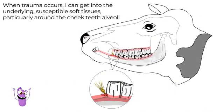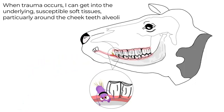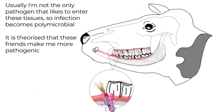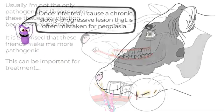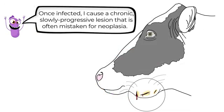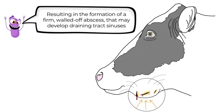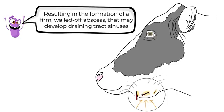Once damage occurs, I get into the underlying susceptible soft tissues, particularly around the cheek teeth alveoli. Usually I'm not the only pathogen that likes to enter these tissues, so infection becomes polymicrobial, potentially making me more pathogenic — and this is important to know for treatment. Once infected, I cause a chronic, slowly progressive lesion that is often mistaken for neoplasia. This is actually due to a pyogranulomatous reaction, resulting in the formation of a firm, walled-off abscess that may develop draining tract sinuses.